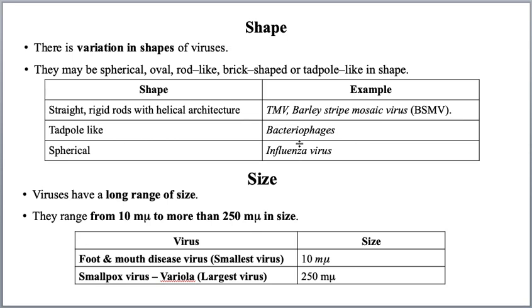I brought a few important examples. TMV — tobacco mosaic virus — and barley stripe mosaic virus (BSMV) are present in a straight rigid rod-like structure with helical architecture. Bacteriophages are tadpole-shaped — these are viruses that infect bacteria. Influenza virus is spherical in shape. That is why viruses vary greatly in their shapes.